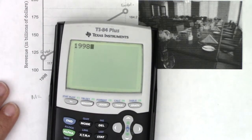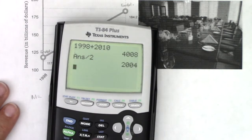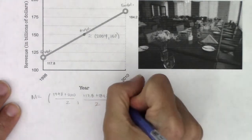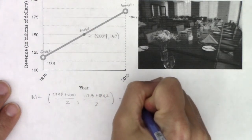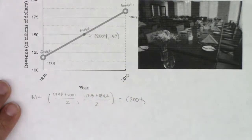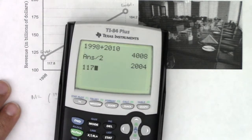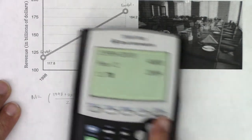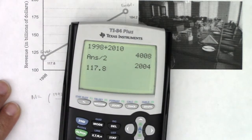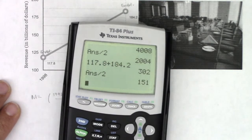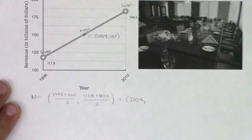Let's see what we're getting on our calculators. We've got 1998 plus 2010, divide that by 2. Sure enough, that is 2004. And then let's take 117.8 and add to it 184.2, divide that by 2, and I'm getting 151 million.